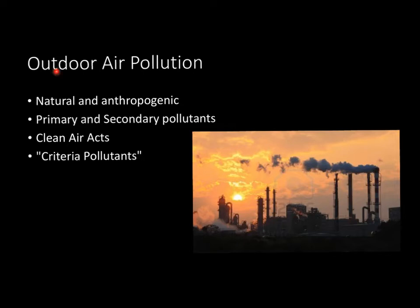Now let's look at outdoor air pollution. There are both natural causes and anthropogenic causes — anthropogenic being a fancy way of saying human-caused. A natural pollutant could be, for example, a volcano or a fire, creating smoke and soot going into the air. An anthropogenic cause could be pollution from factories, driving cars, or really anything. A primary pollutant is something such as carbon monoxide that comes directly from the source, whereas a secondary pollutant occurs when a primary pollutant reacts with something else in the troposphere.